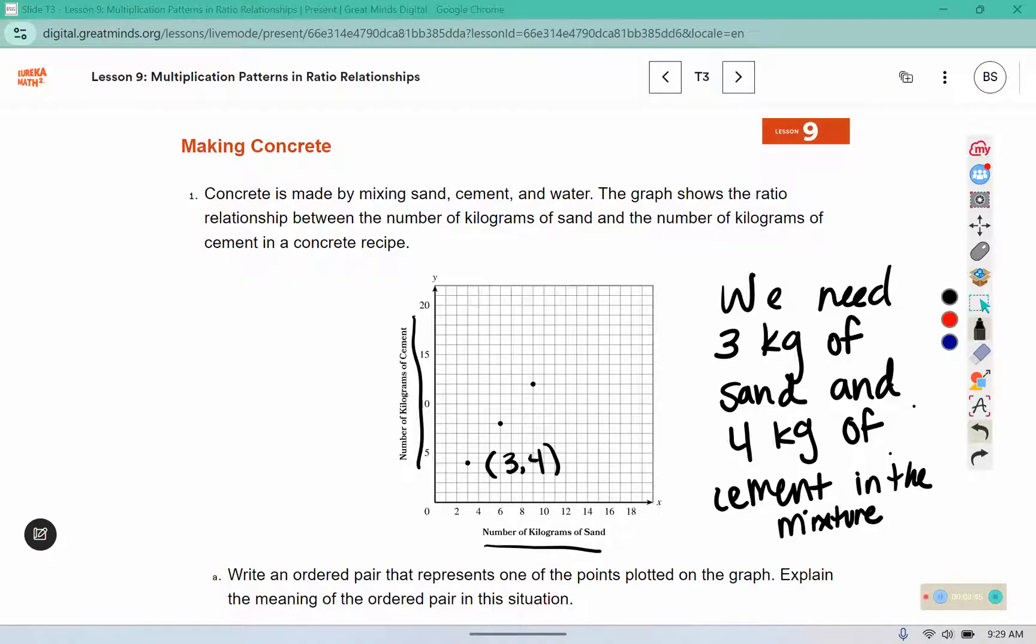We could also say that for every 3 kilograms of sand, we need 4 kilograms of cement. And you're going to write this down in part A, but I don't have room here, so I just wrote mine on the side.